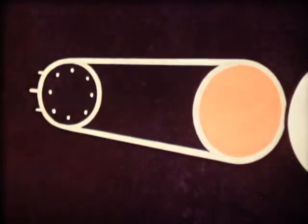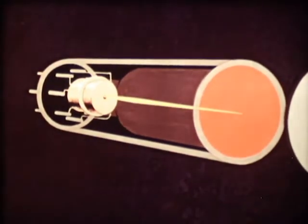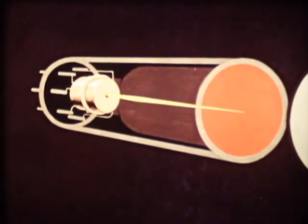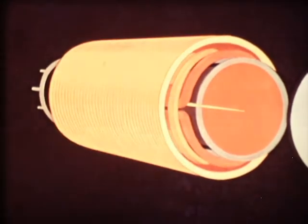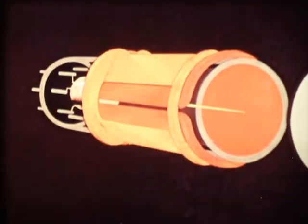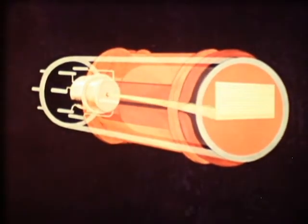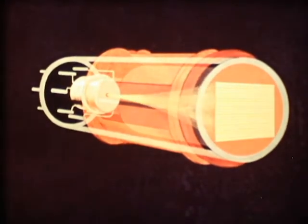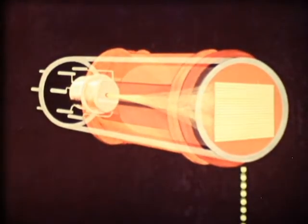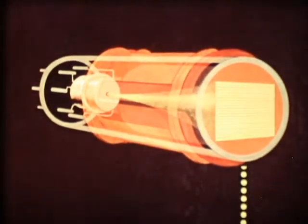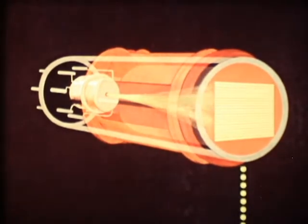Situated at the other end is the electron gun, which directs an electron beam towards the signal plate. Around the tube is a focusing coil and two deflection coils which cause the electron beam to scan the signal plate. Now that we've discussed briefly the construction of the tube, we will examine the various parts individually, to begin with the electron gun.